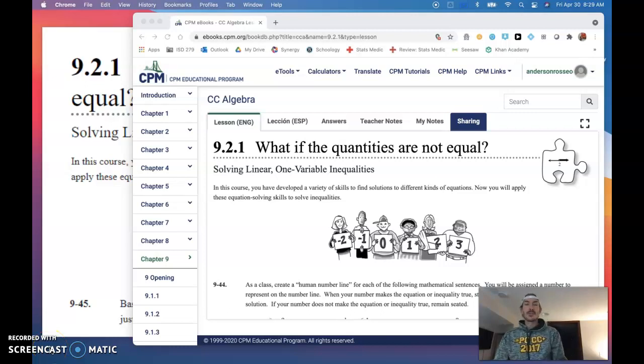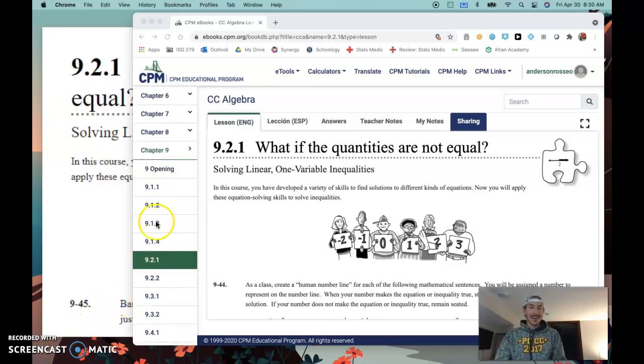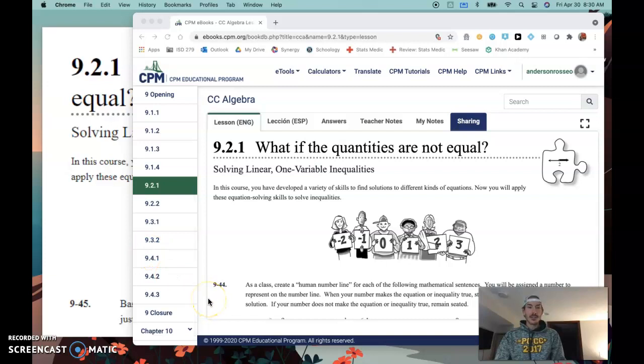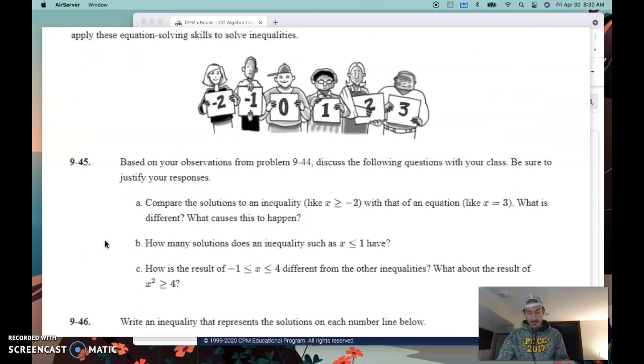All right, ladies and gents, welcome back. Today we're going to get into the second half of our ninth unit here in our CPM Common Core Algebra text, where we're starting to talk about inequalities. You can see in our book that we're through the nine ones. Now we journey and venture into the nine twos, where inequalities show up.